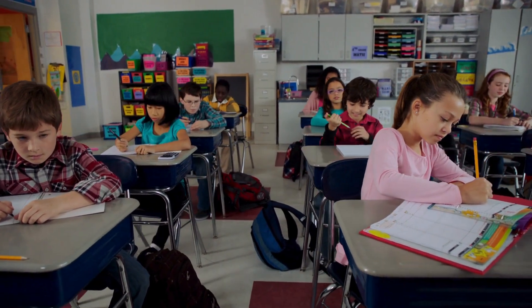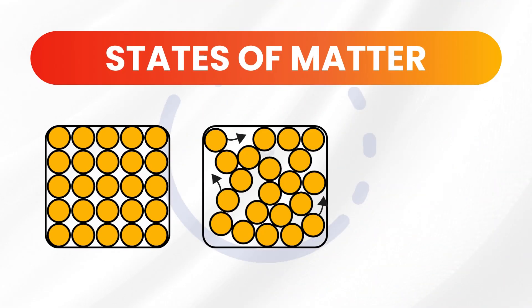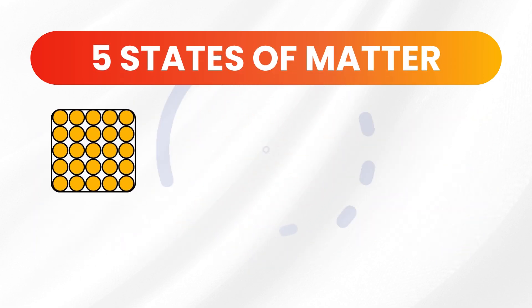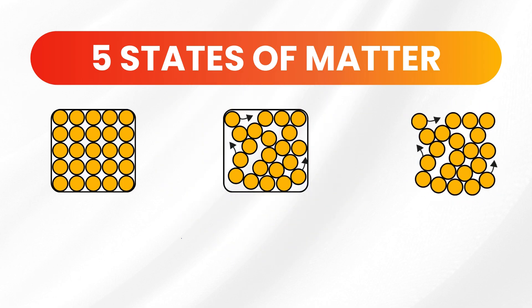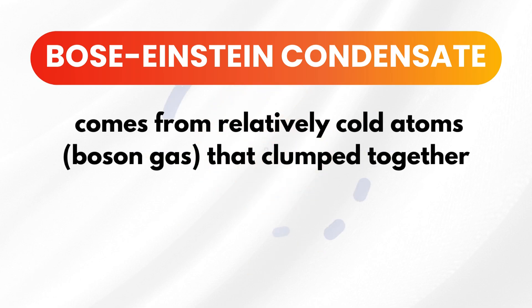When you were in your elementary levels, you were taught that matter has three phases — solids, liquids, and gas — that react differently based on their particles. However, there are five states of matter: solids, liquids, gas, plasma, and Bose-Einstein condensate. In this section, plasma, which is considered the fourth state of matter and exists only at relatively high temperatures like the particles on the surface of the sun, as well as Bose-Einstein condensate that comes from relatively cold atoms that clump together, will be excluded from the discussion.